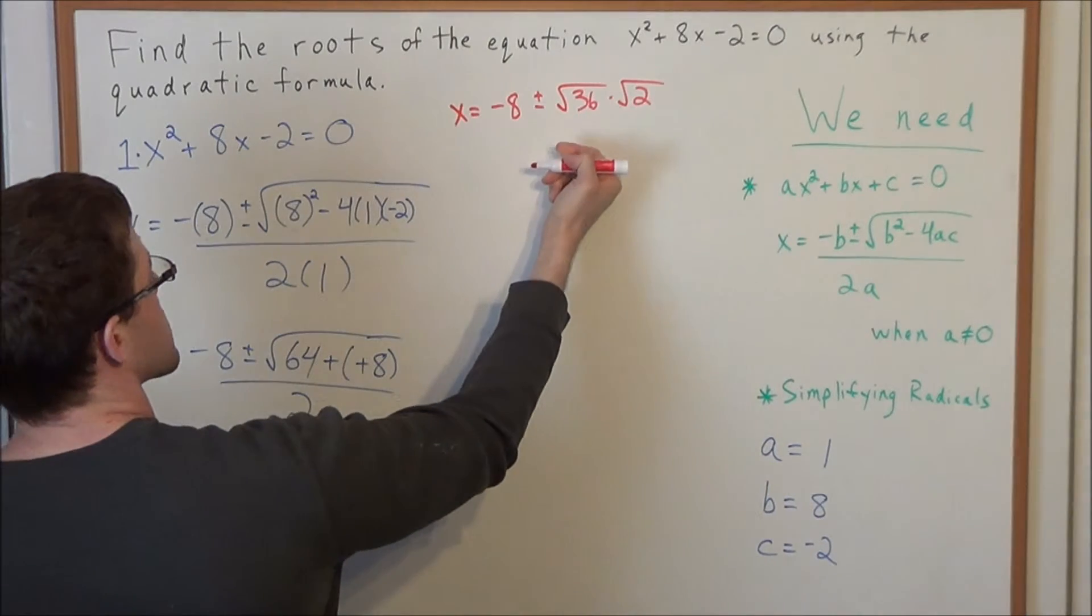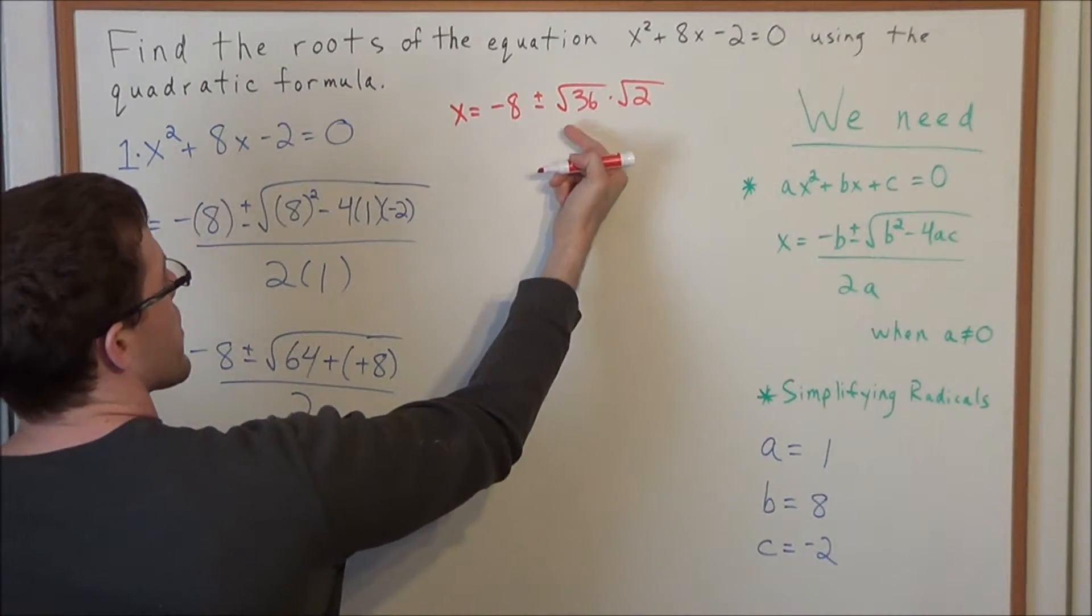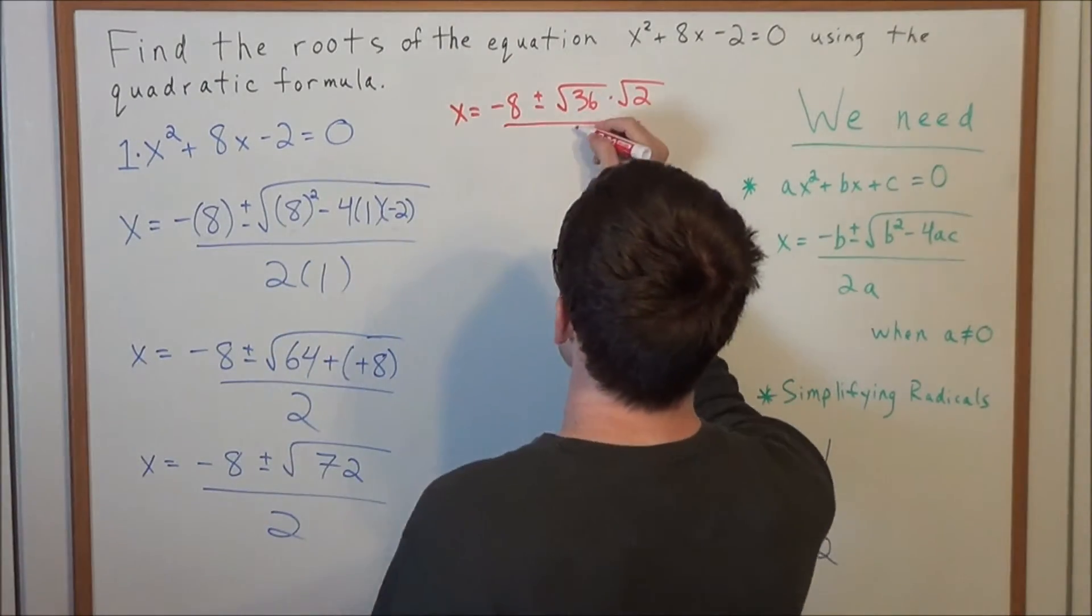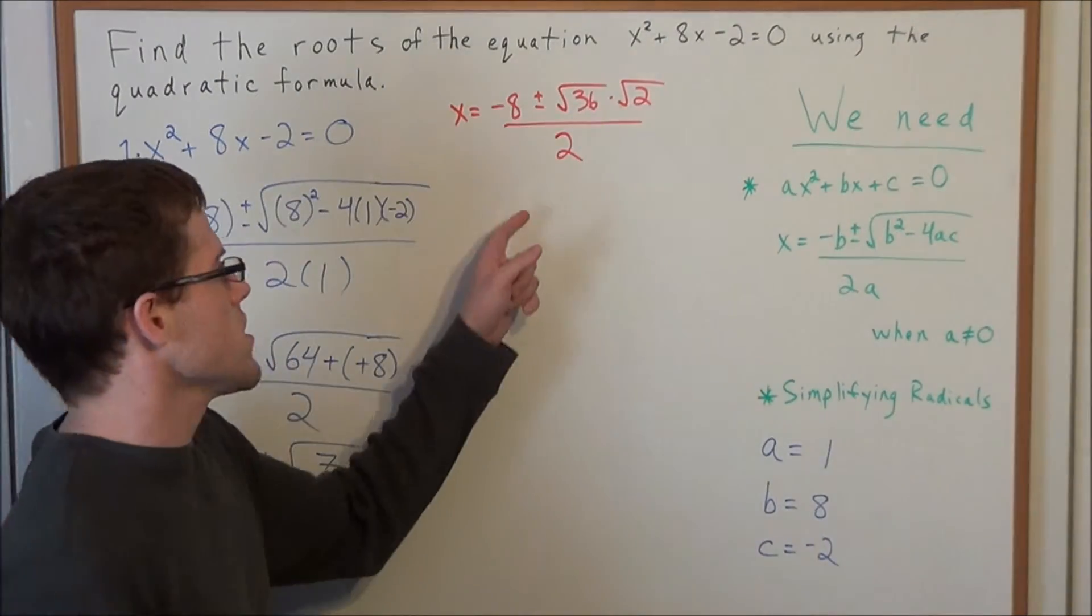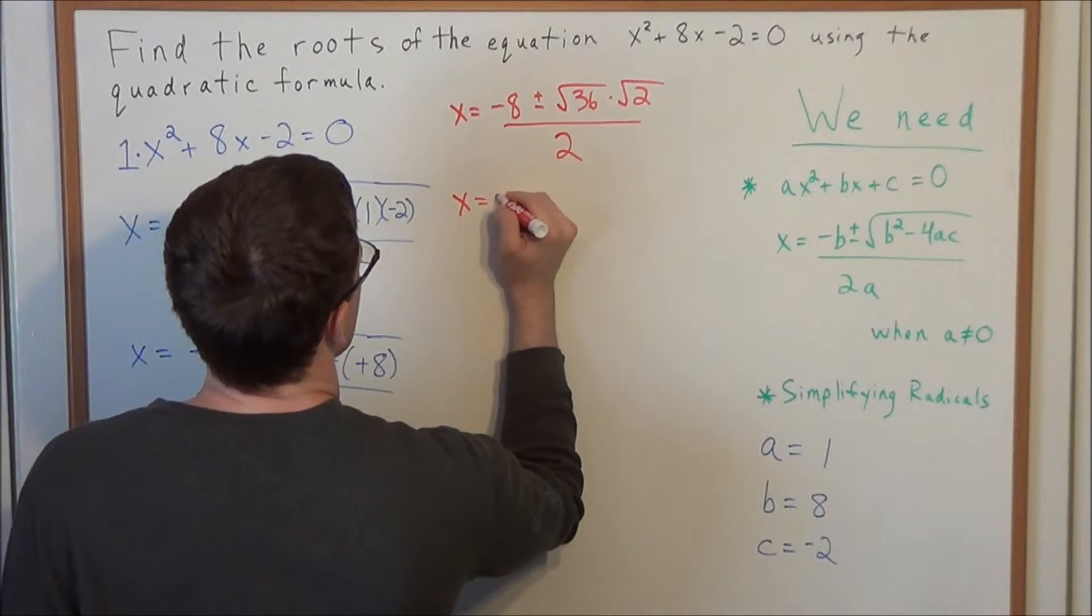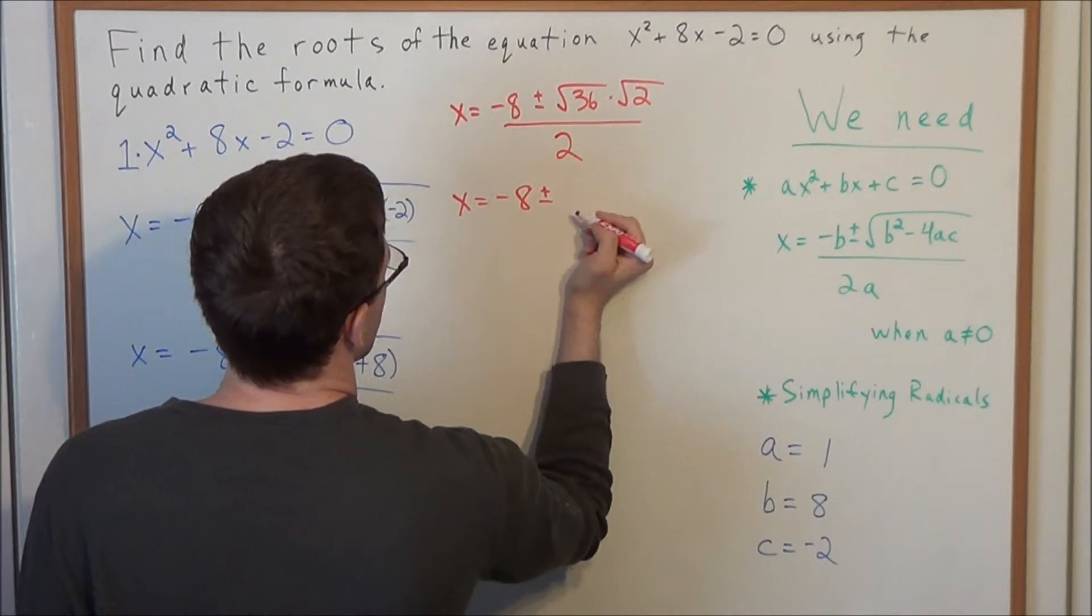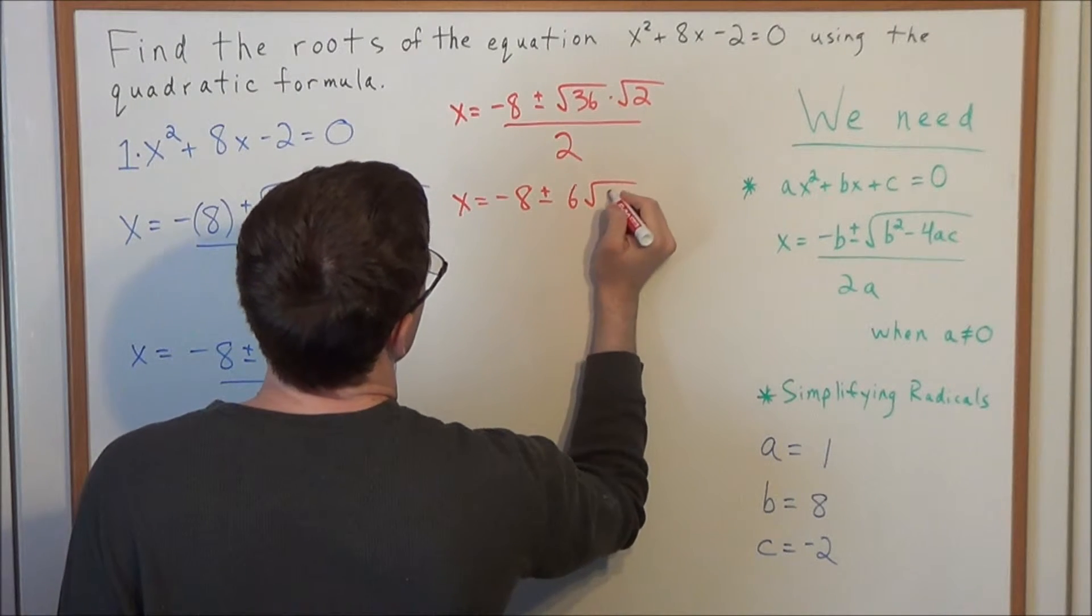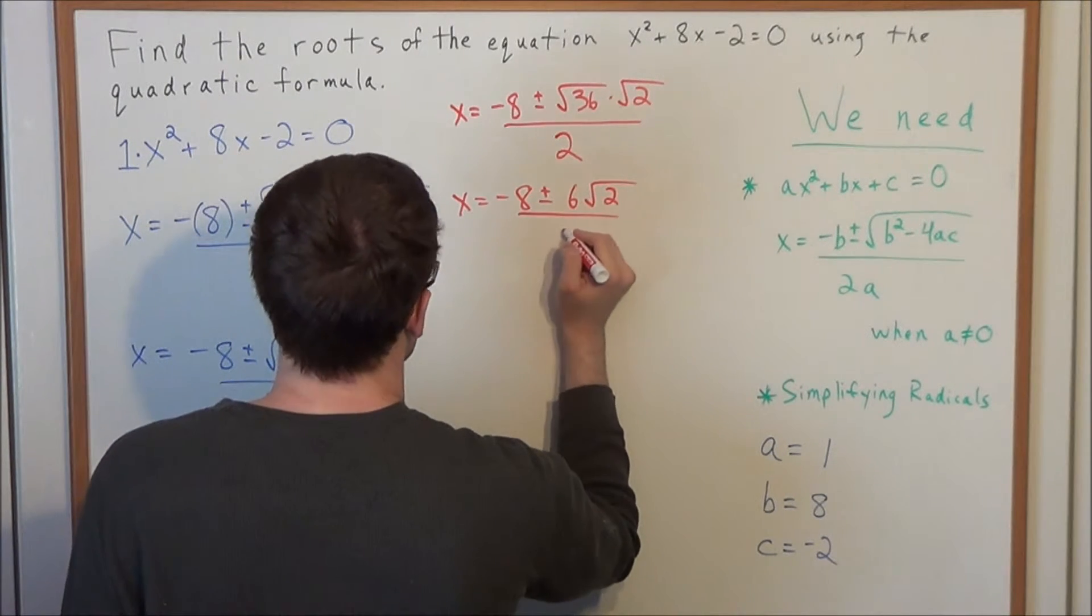This is the greatest factor we could find that's a perfect square, divided by 2. So now for the next line, to simplify further, we have x = -8 ± (√36 is 6), so 6√2 divided by 2.